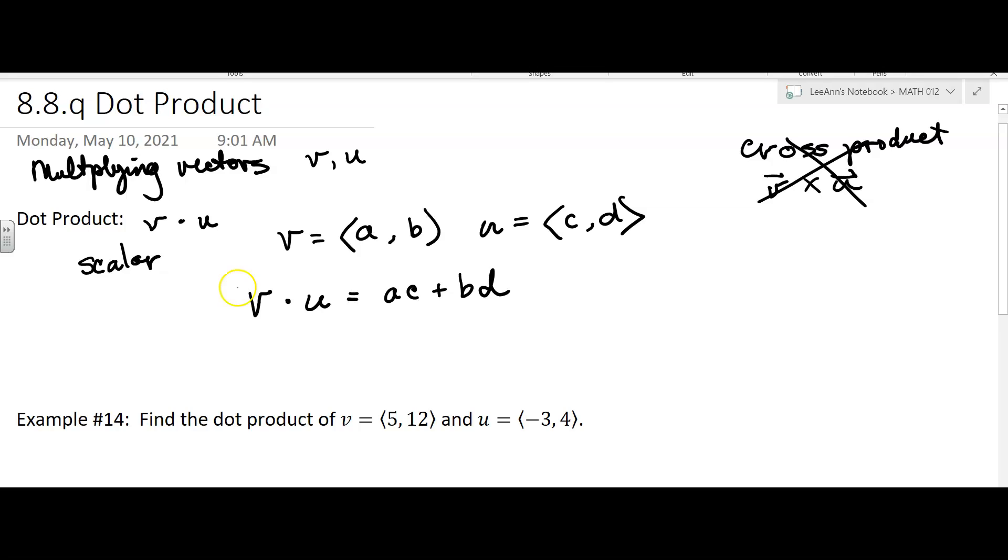They also talk about finding the angle between V and U, the angle between your two vectors. That's found by the cosine of theta. Now I probably need to describe theta.